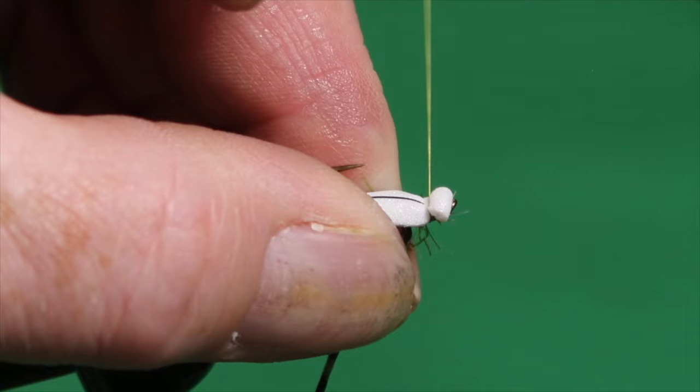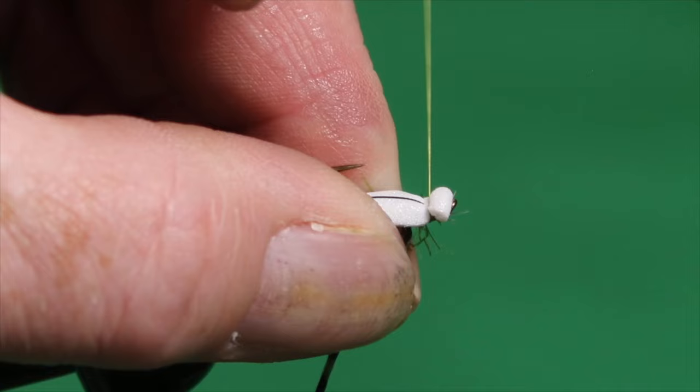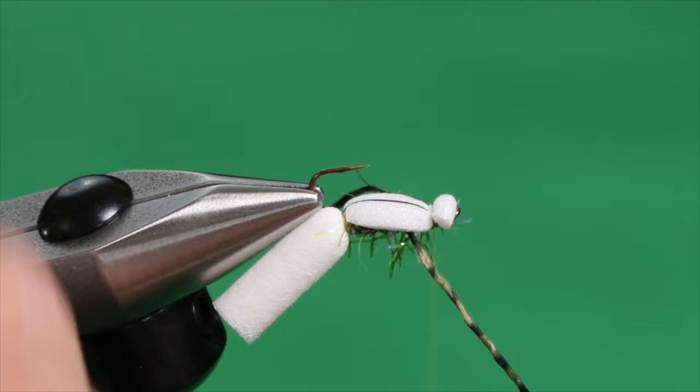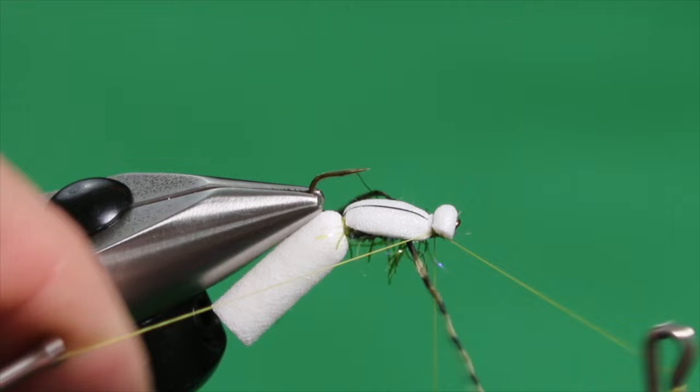And then hold those legs a little bit. A few extra wraps for luck. Grab our whip finisher. Whip finish. The tying portion is done.